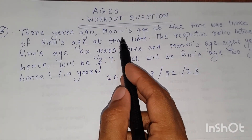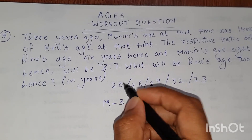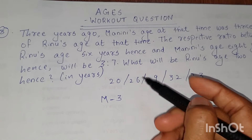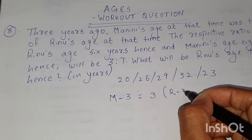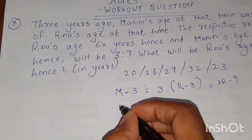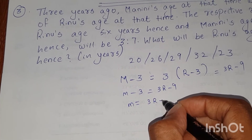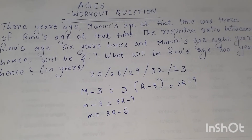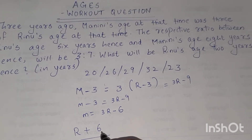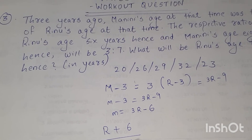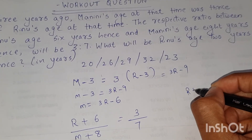Going to the third workout question. It is given that Manini's age — let the present age of Manini be M. It is given that 3 years ago, that means M minus 3, Manini's age at that time was thrice of Renu's age at that time. So M minus 3 is equal to 3 times R minus 3, which is 3R minus 9. So M is equal to 3R minus 6. The second condition: the respective ratio between Renu's age 6 years hence, R plus 6, and Manini's age 8 years hence, M plus 8, will be 3 by 7. You have to find out Renu's age 2 years hence, that means R plus 2.